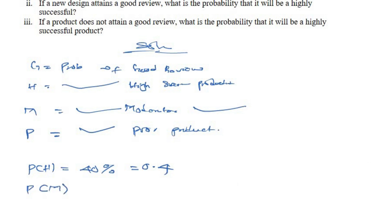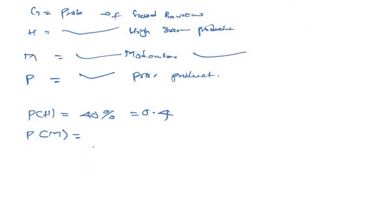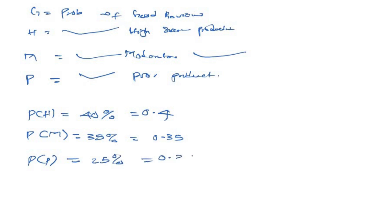For moderately successful products, 35% have been moderately successful, so P(M) = 0.35. For poor products, 25% have been poor, so P(P) = 0.25.